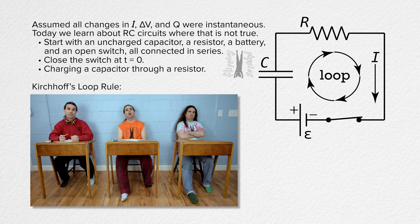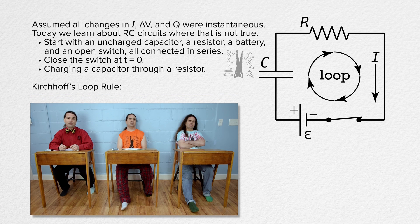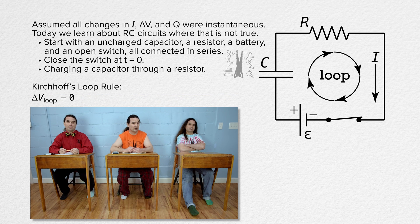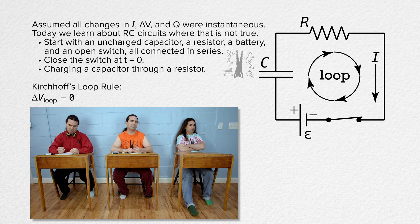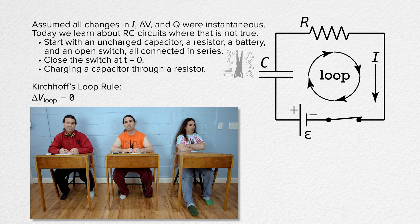Kirchhoff's loop rule states that the electric potential difference around a loop equals zero. Starting in the lower right-hand corner and moving in the direction of the loop, the first circuit element we come across is the switch. However, after we close the switch, that just acts like any other wire in the circuit, and all the wires have negligible resistance. Next up is the battery. We are moving from the negative to the positive terminal of the battery, so the electric potential goes up as we move in the direction of the loop across the battery. So that is a positive EMF.